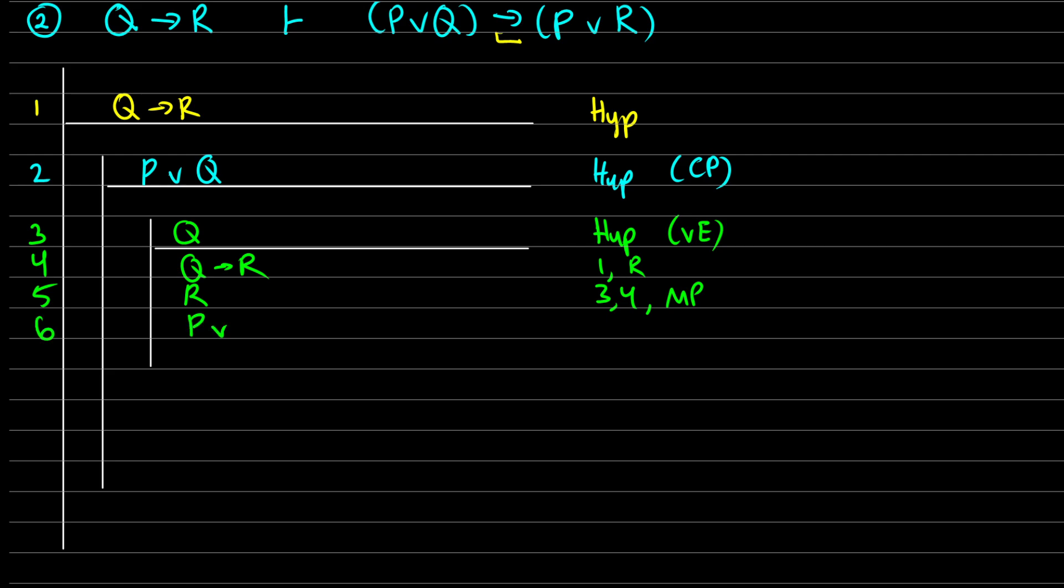So in line six, I'm going to use or introduction on line five to get P or R. So I can introduce on the left side or the right side. It really doesn't matter because they're the same. If commutativity, if order matters, then you'd have to do a new little sub proof in there.